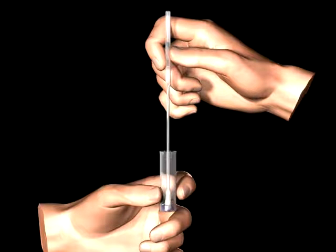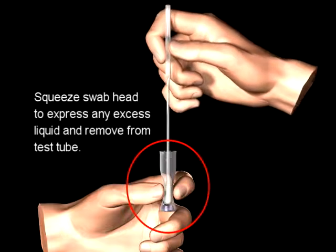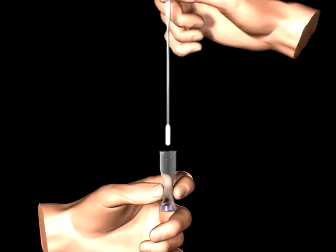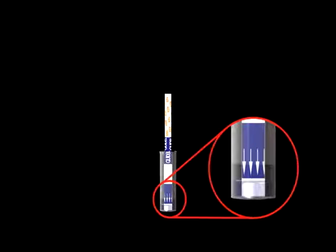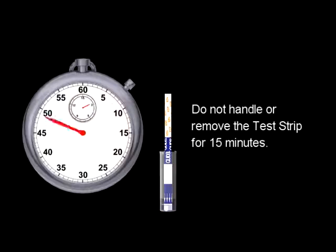Express all liquid from the swab head by squeezing the test tube as the swab is removed. Remove the test strip from the foil pouch and place it in the test tube containing the extraction reagent and patient sample. Make sure the arrows on the test strip are pointing down. Do not handle or remove the test strip for 15 minutes.